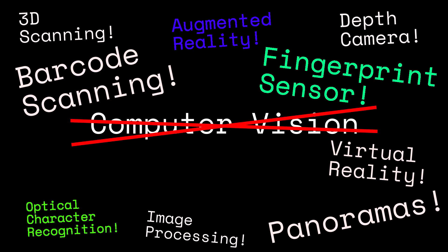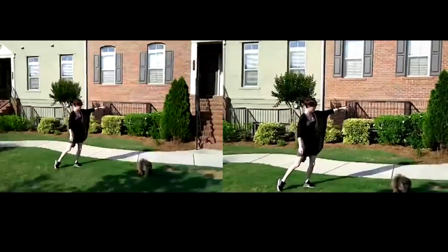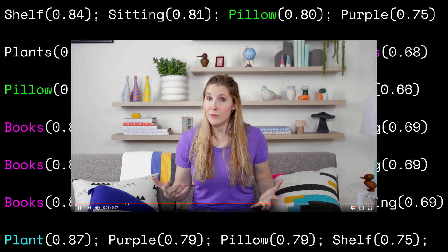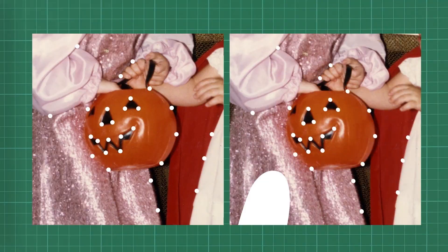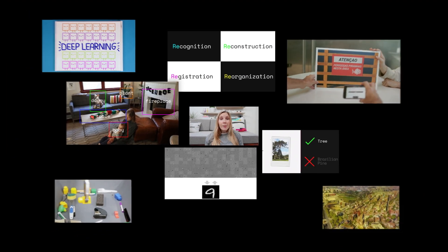The term computer vision hasn't really appeared in the popular media that much until recently. Part of that is because when something became successful, it got renamed. Barcode scanning is an instance of computer vision. Computer vision is also responsible for the yellow first-down line you might see watching football on TV. It helps stabilize videos, create virtual worlds, help cameras see faces so they're not blurry, and it's getting better at recognizing what's going on in a video, making whatever you're searching for on YouTube easier to find.